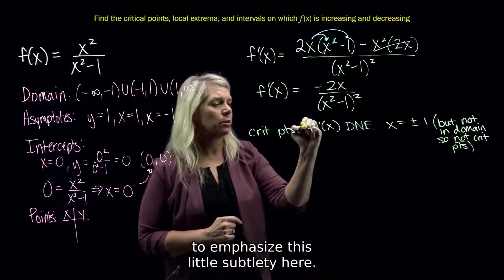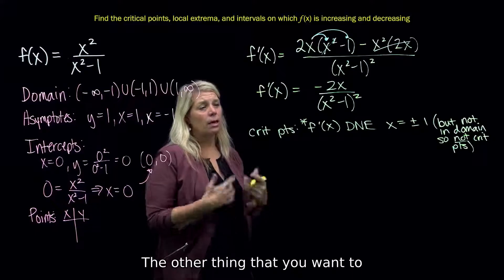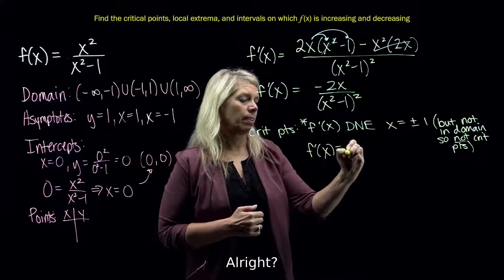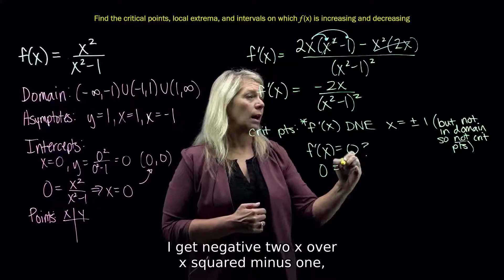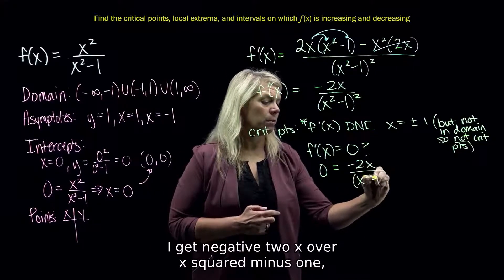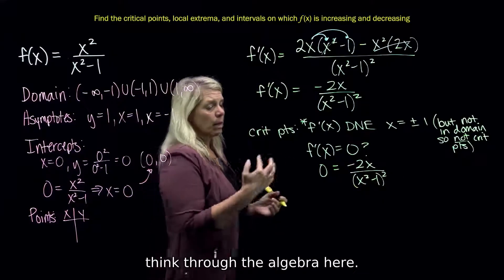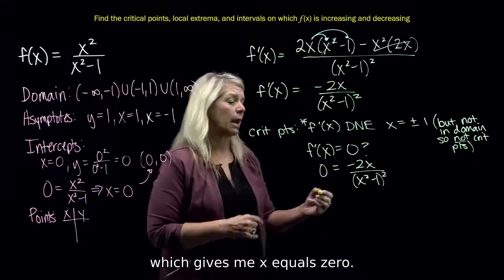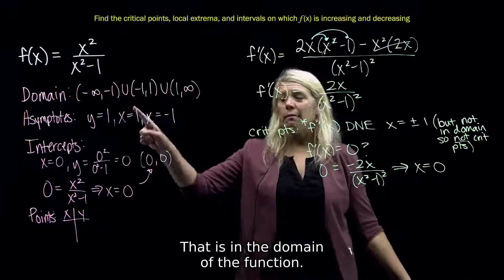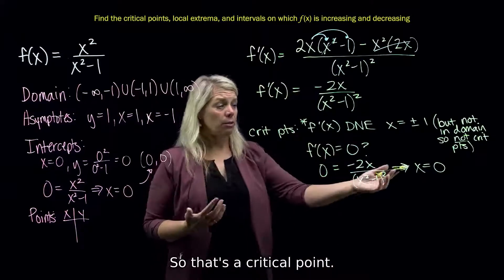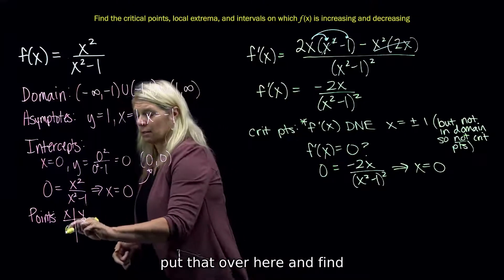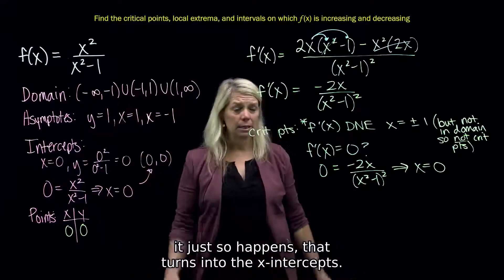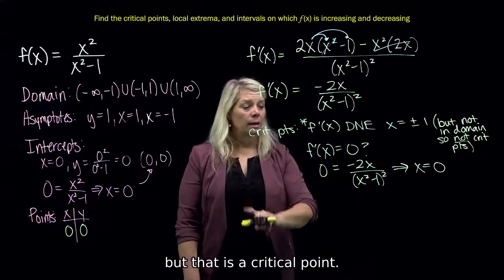That's part of why I did this example — to emphasize this little subtlety. The other thing you want to look for when looking for critical points is where the derivative is 0. If I set the derivative equal to 0, I get negative 2x over (x squared minus 1) squared, set equal to 0. Multiplying through by the denominator gives 0 equals negative 2x, which gives x equals 0. That is in the domain of the function, so that actually is a critical point. That turns into the x-intercept, so I already found that point — (0, 0).